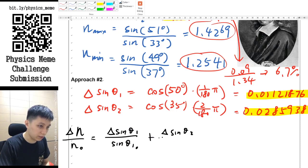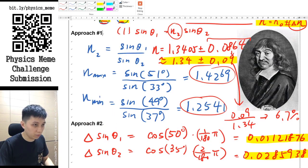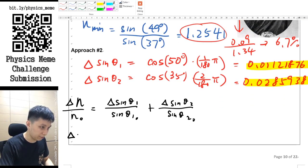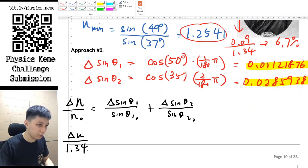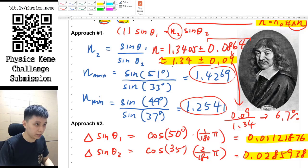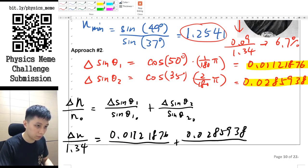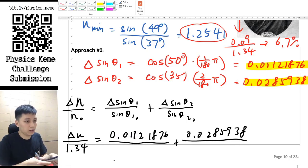same for the Δθ₂ with the answer from what we get above. So we can be a bit lazy here, so then we can just find Δn / 1.34 because we calculated earlier, and then you can simply put the whole number and below will simply be again this sin 50...